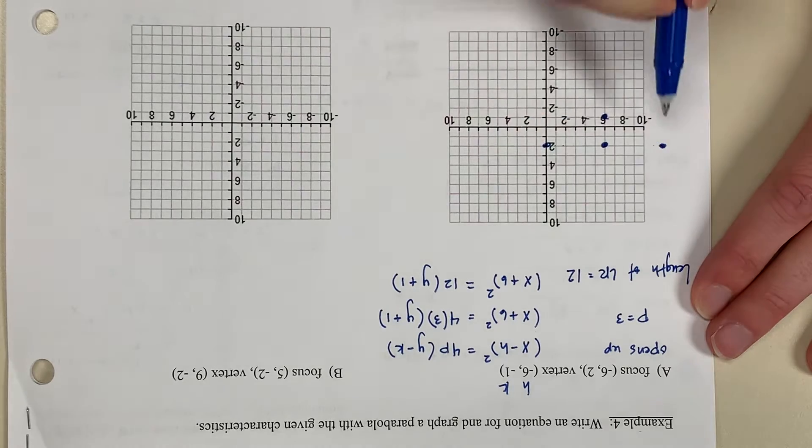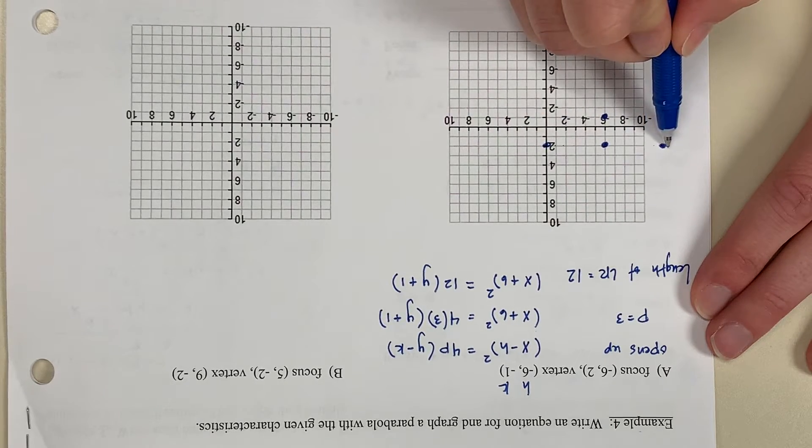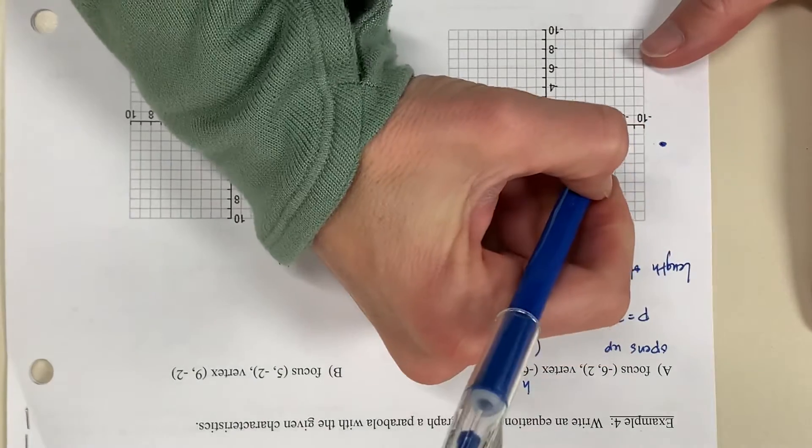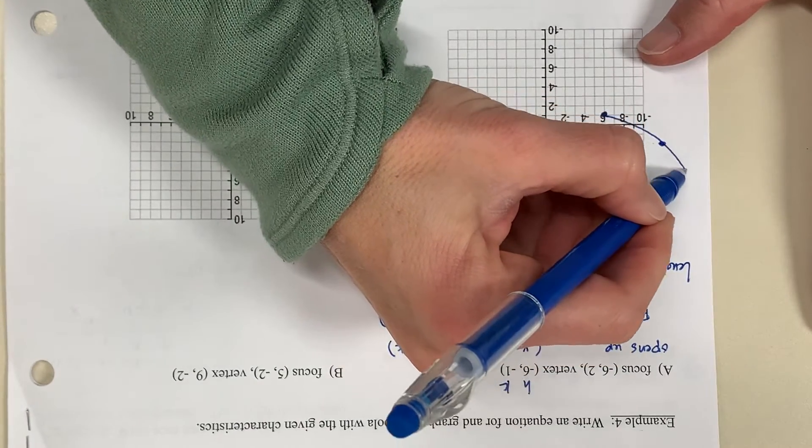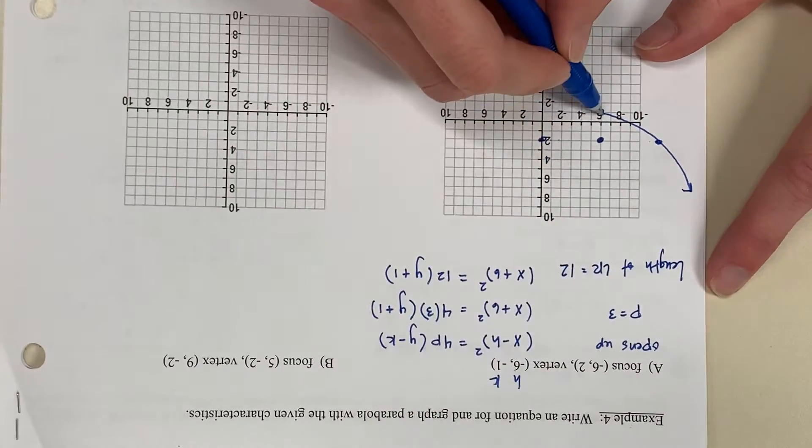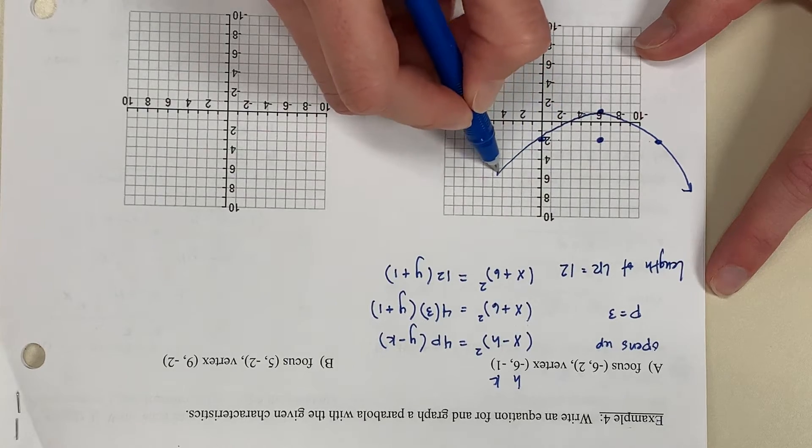So if I were to count from one endpoint of the LR to the other, it would be 12 units long. And I have a graph of my parabola.